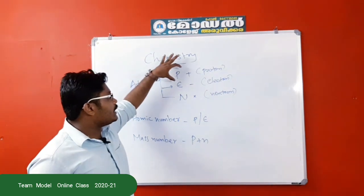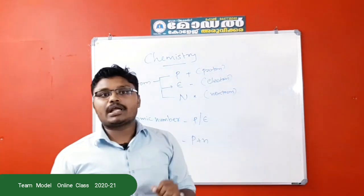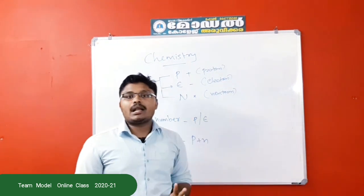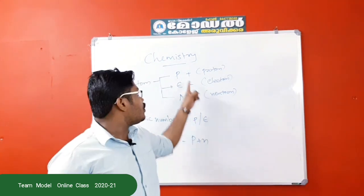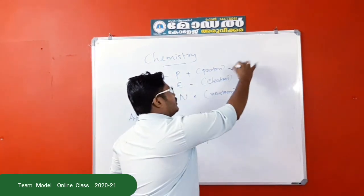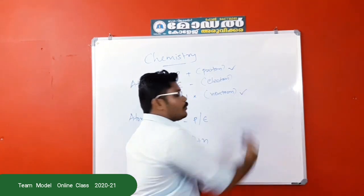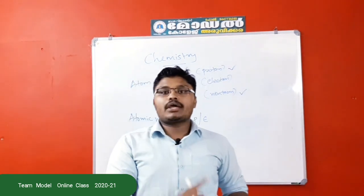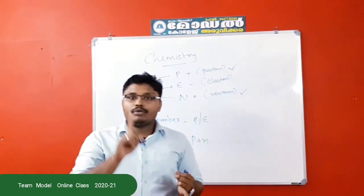One is the nucleus. The nucleus has two particles: one is the proton, and the other particle is the neutron. That is the center. The center is the proton and neutron.